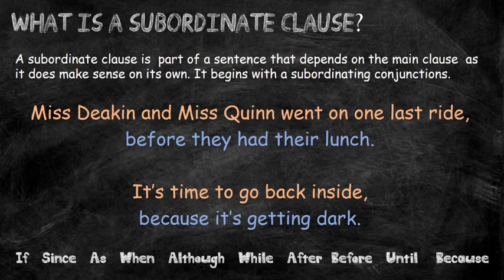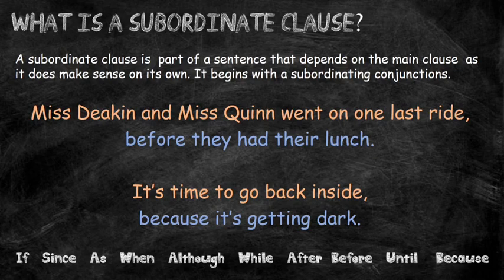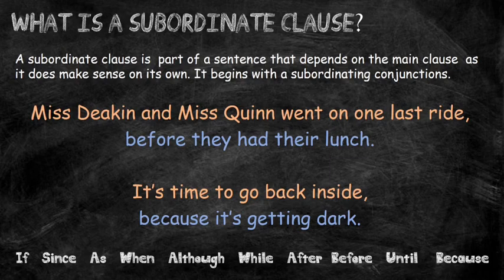The second sentence: it's time to go back inside because it's getting dark. The main clause — the part that would make sense on its own — is 'it's time to go back inside.' By adding the subordinate clause 'because it's getting dark,' we've just provided more detail. Also, remember to put a comma before your subordinating conjunction. So if you look at the words 'before' and 'because,' there is a comma before both of those words.